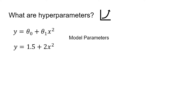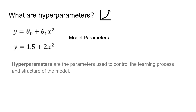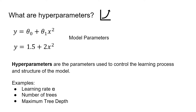Hyperparameters, on the other hand, are a special type of parameter. They are the parameters used to control the learning process and structure of the model. For example, with gradient descent we can set the learning rate alpha, and for gradient boosted trees we can set the number of trees. So these are all examples of hyperparameters.